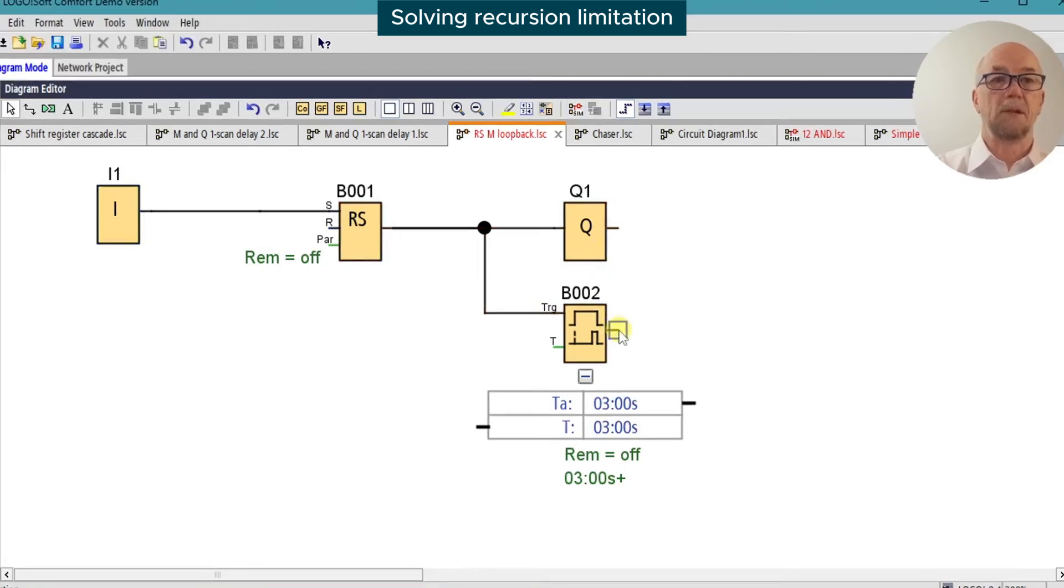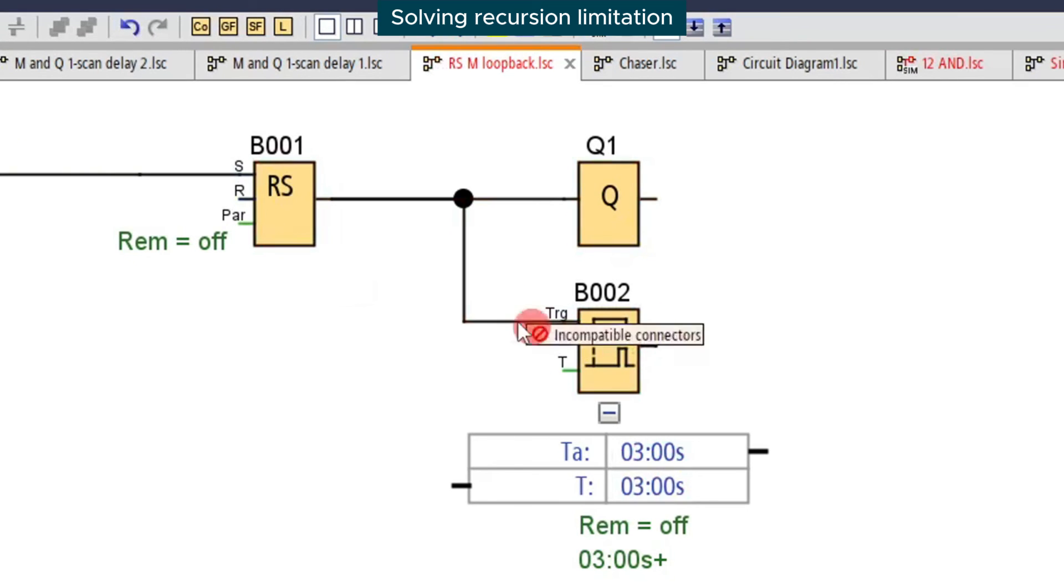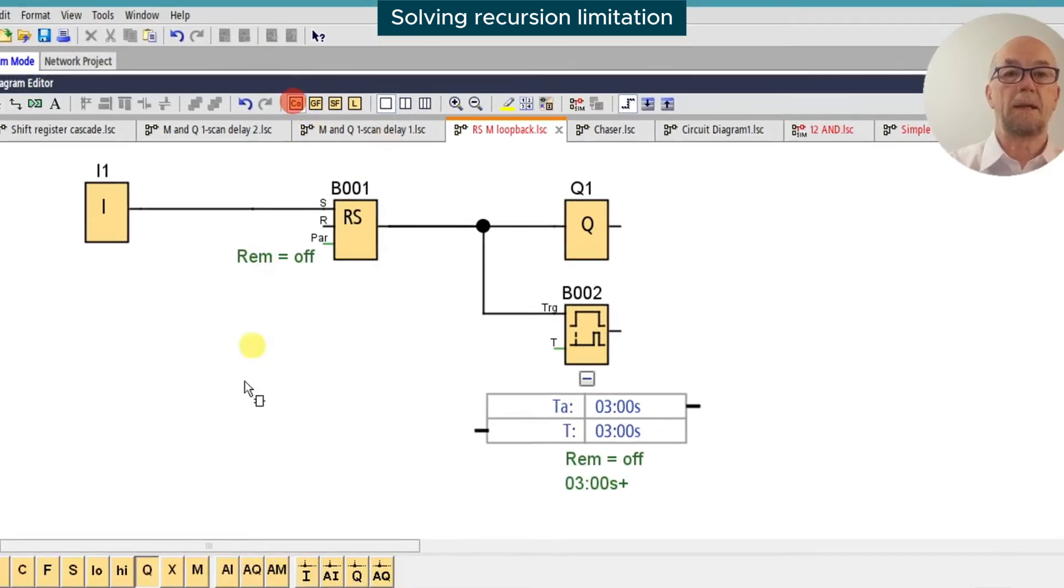So if we try and connect this up to the reset input, we get the recursion only allowed via outputs and flags error message. So it's preventing us doing a recursion. So if we add in an M relay, an M block, connect that up.